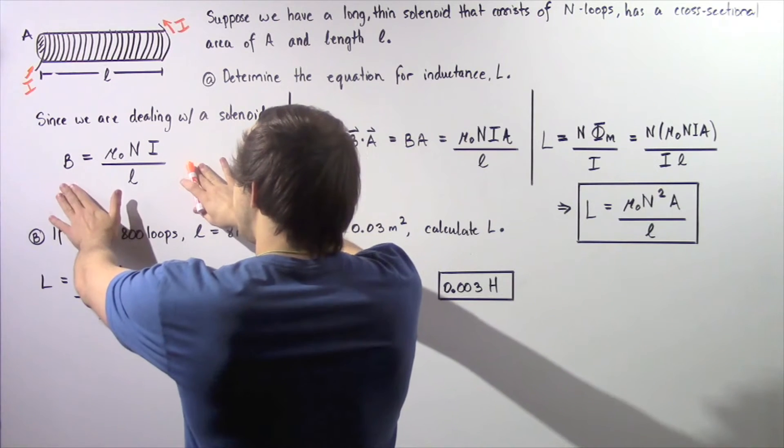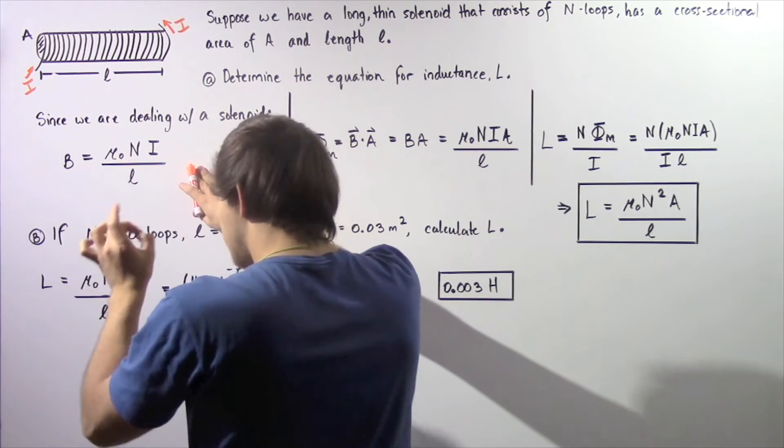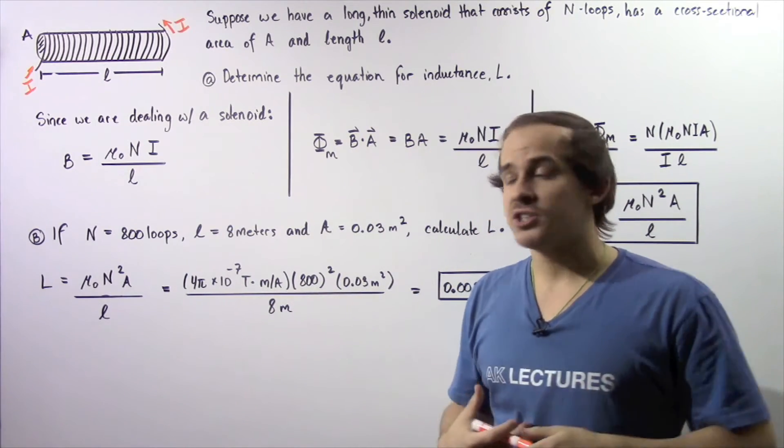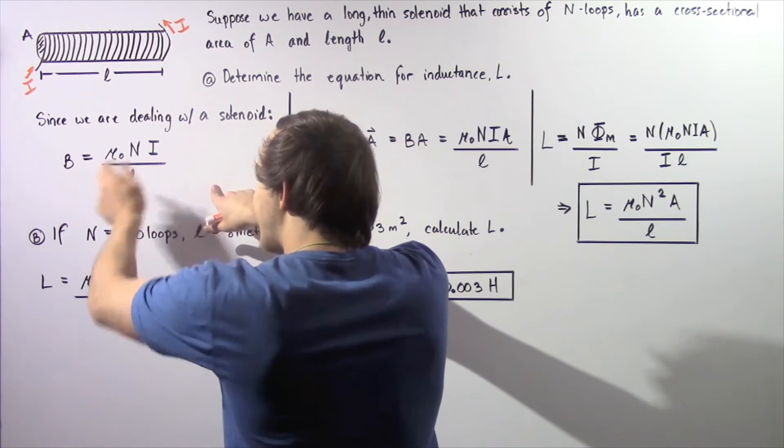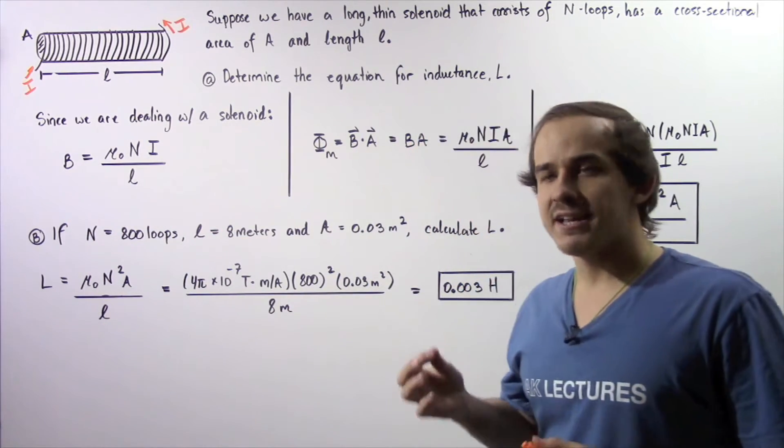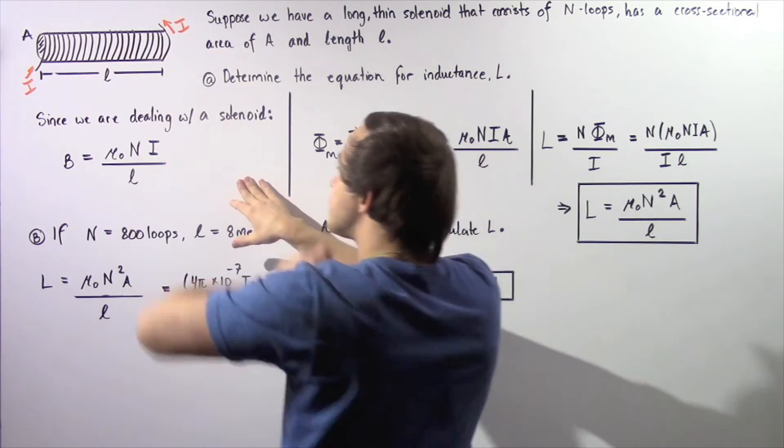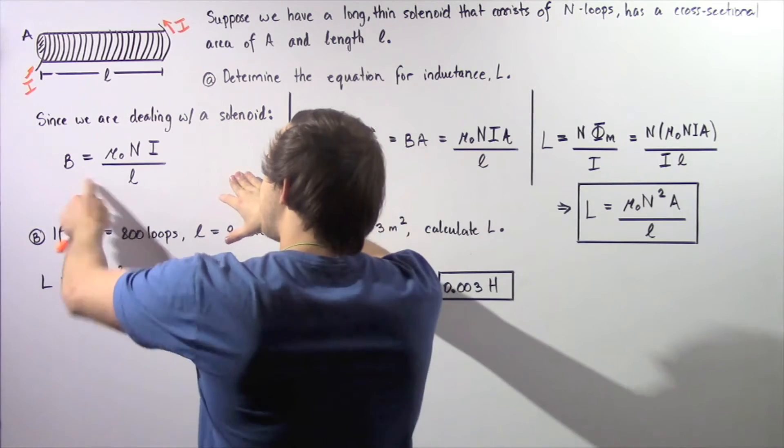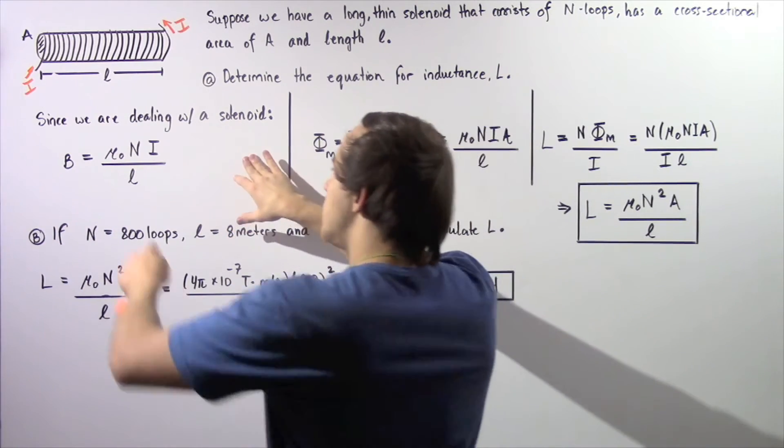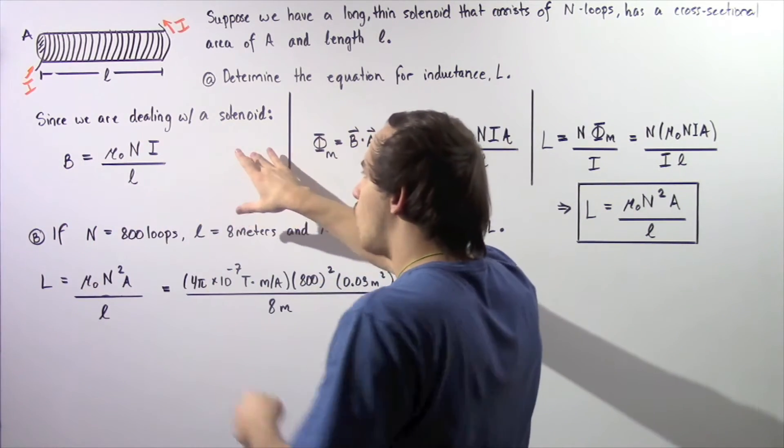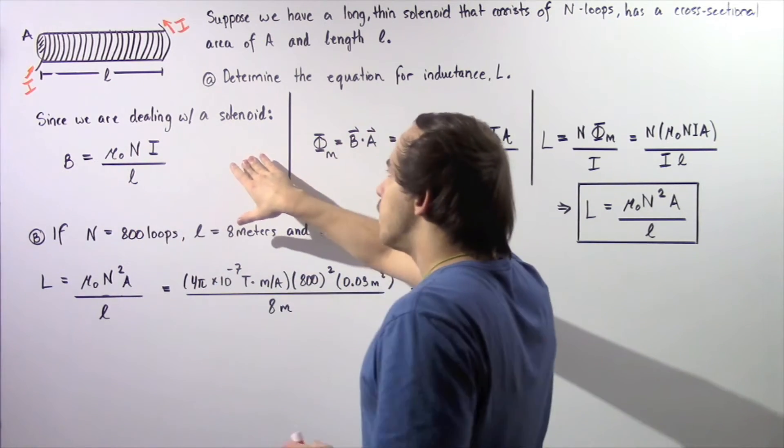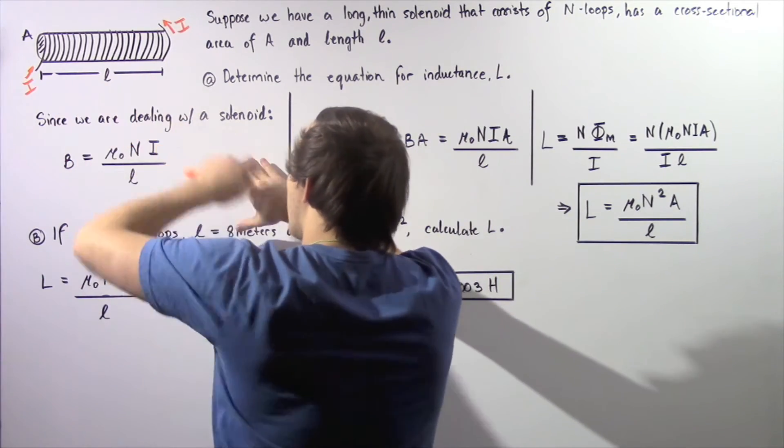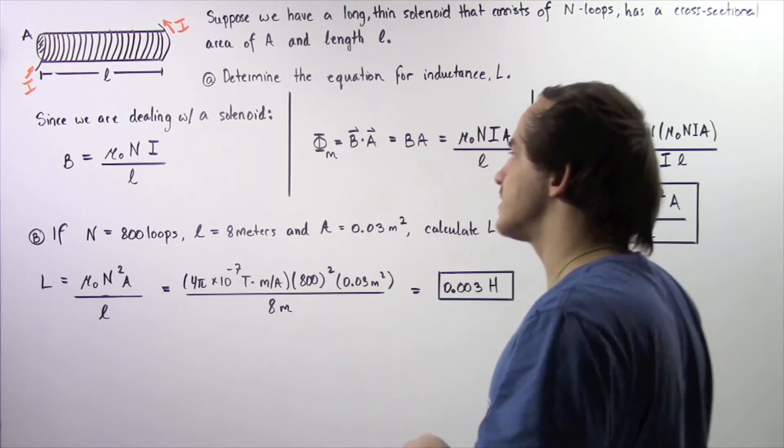Let's begin by looking at the following equation. Because we are dealing with a solenoid, in the lecture on solenoids we were able to derive the following equation. This is the equation that gives us the magnetic field B that is produced within our solenoid as a result of our electric current I. So the magnetic field B is equal to the permeability of free space μ₀ multiplied by N, the number of loops of wire, multiplied by I, our electric current, divided by L, the length of our thin long solenoid.